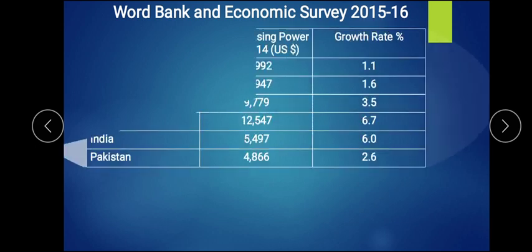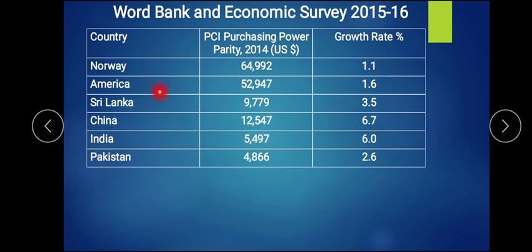Let us study a data table from the World Bank and Economic Survey 2015 for countries: Norway, America, Sri Lanka, China, India, and Pakistan. The data gives per capita income in purchasing power parity in US dollars as per 2014. Purchasing power parity means how much money a person is spending for their living — how much they are able to spend on expenses in a particular year. A growth rate column is also provided.